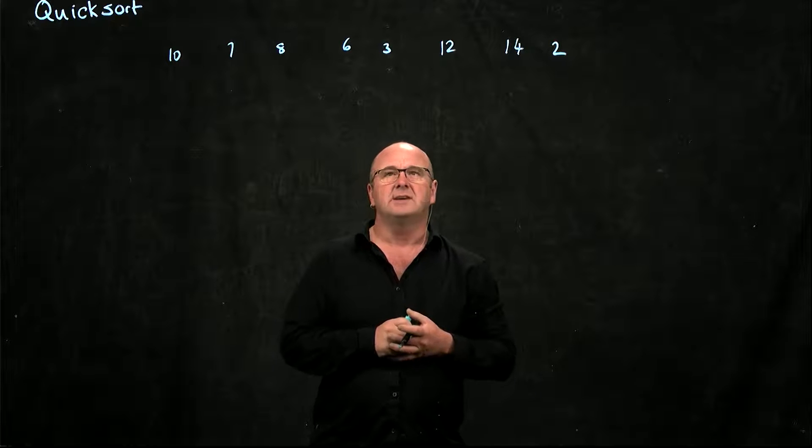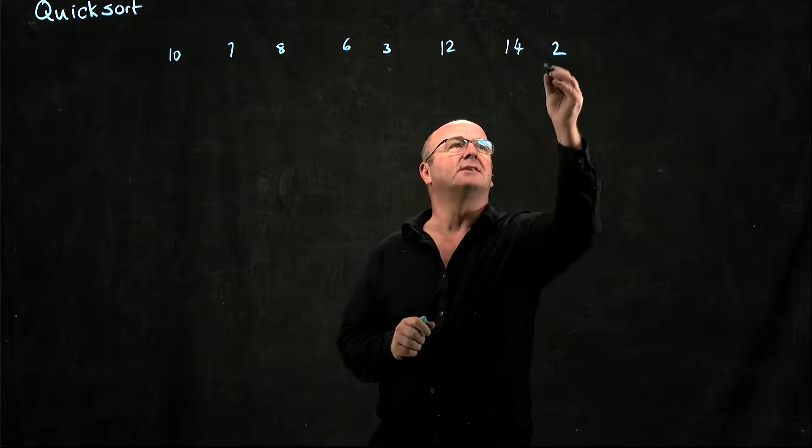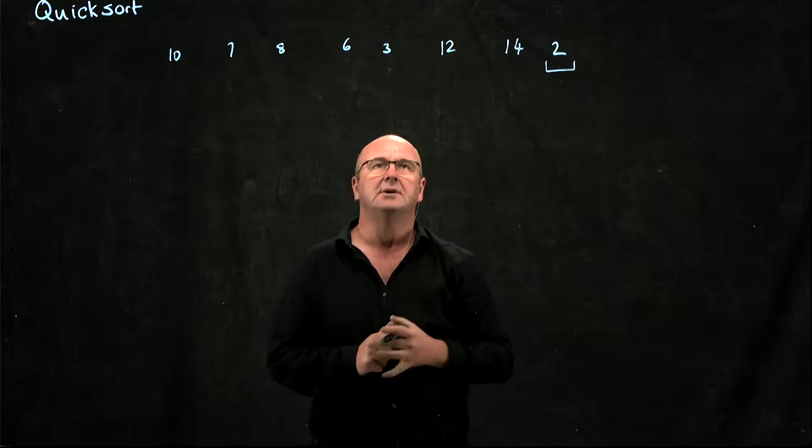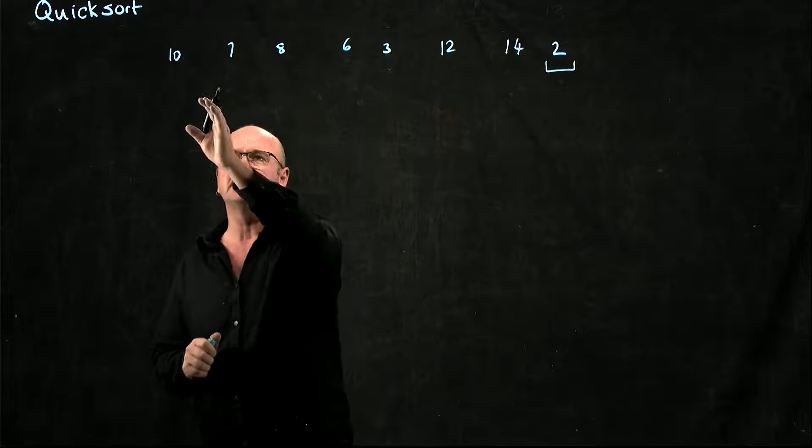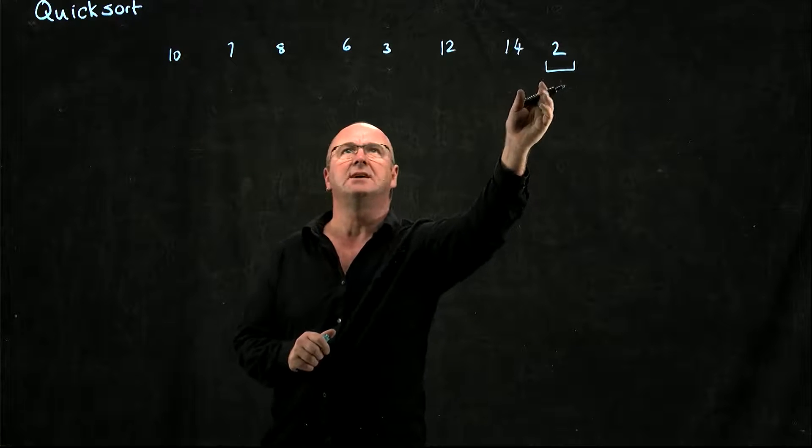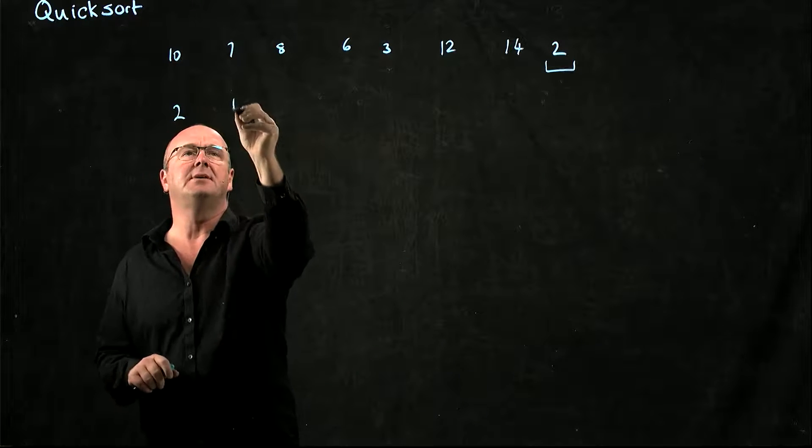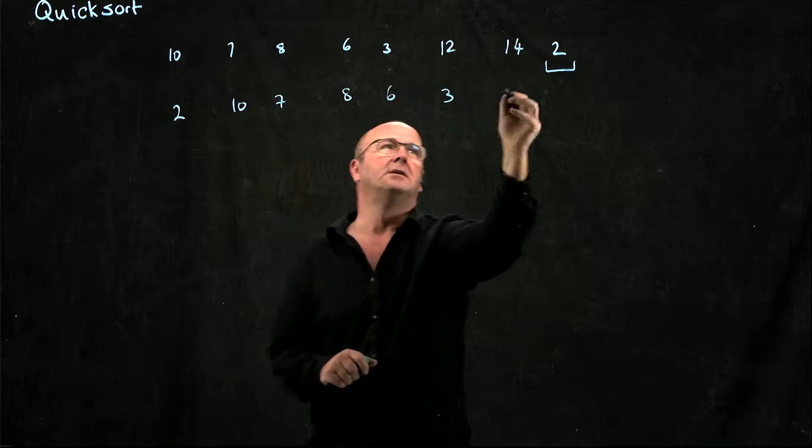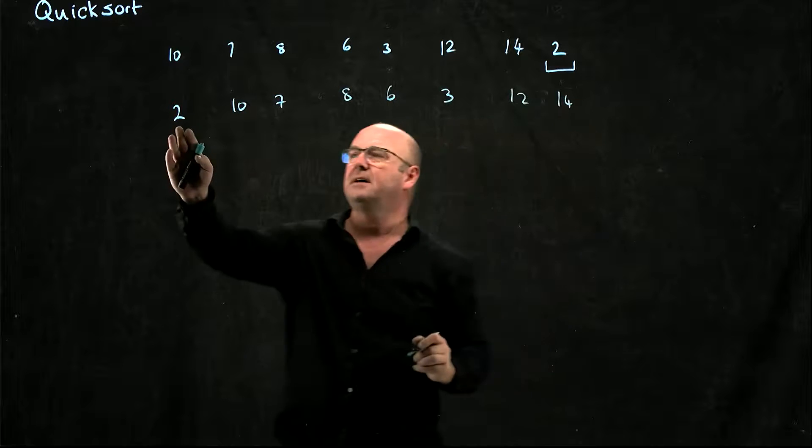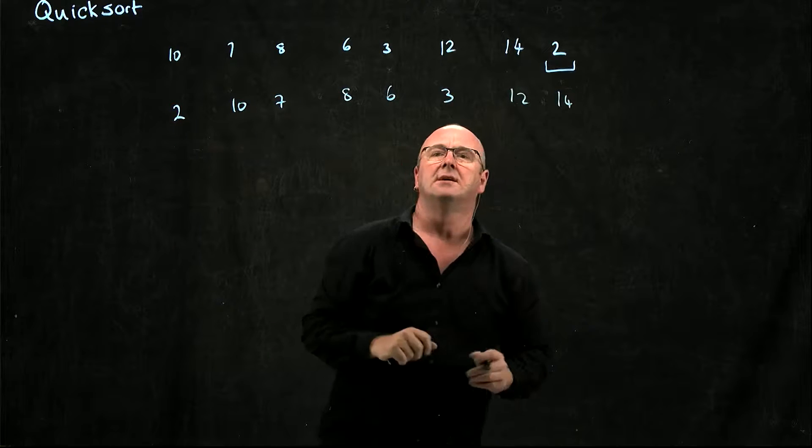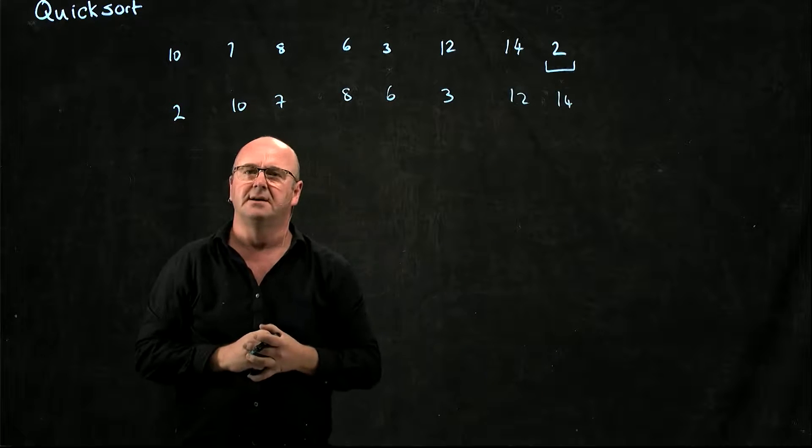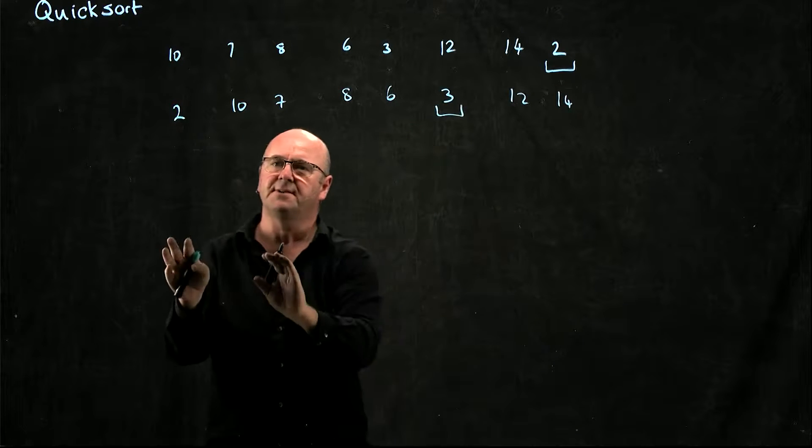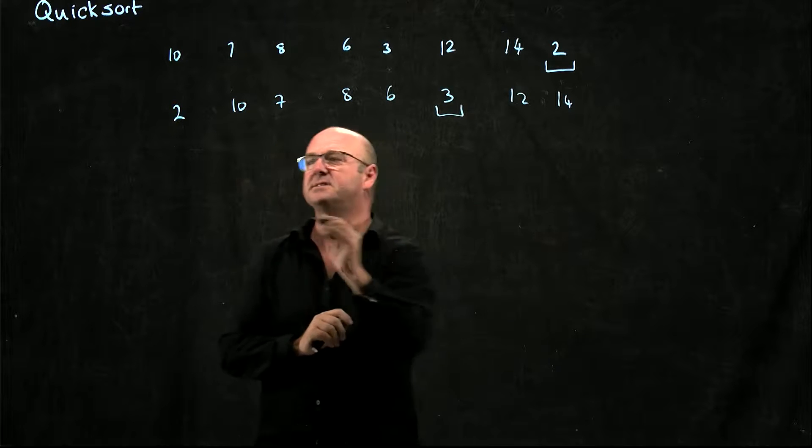However, what's going to happen if, when I'm doing my quicksort, I choose my pivot to be the number 2? Now I move the smaller things to the left and the larger things to the right. So now I end up with my 2 on the left and everything larger on the right. Now what happens if I choose my number 3 as my pivot point? I move the smaller things to the left, the larger things to the right.